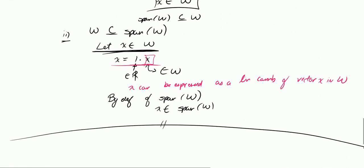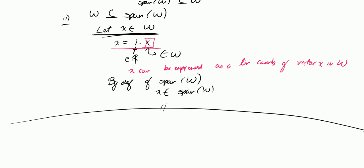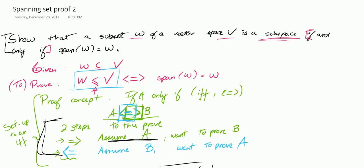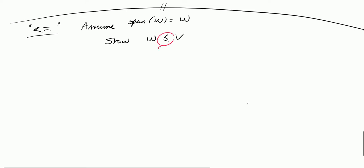If you just came here to look at the second part of the proof, here it is. If not, go back to that video and check it out. The second part of my proof is the backwards direction, where I'm going to assume that span of W is equal to W, and I want to show that W is a subspace of V. So we usually write the backwards direction like that. I assume that span of W is equal to W, and I want to show that W is a subspace of V.